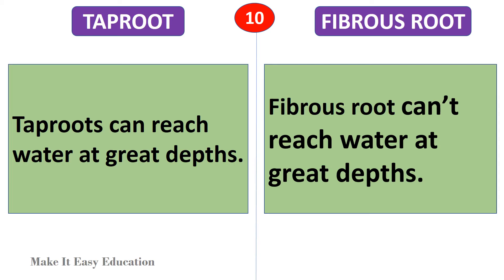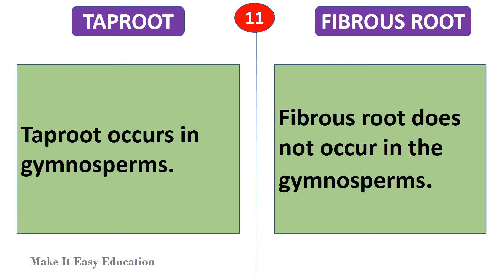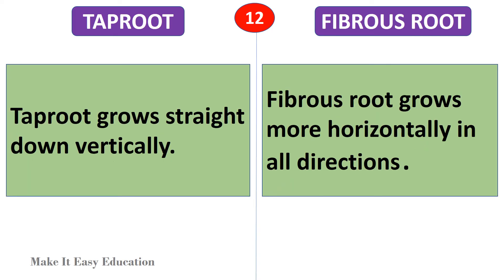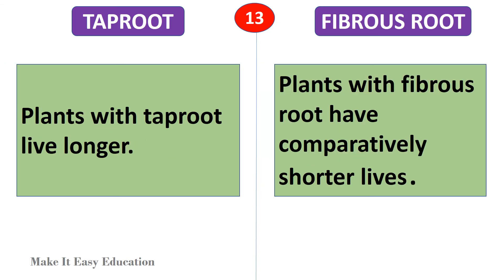Taproots can reach water at great depths. Fibrous root can't reach water at great depths. Taproot occurs in gymnosperms. Fibrous root does not occur in gymnosperms. Taproot grows straight down vertically. Fibrous root grows more horizontally in all directions.